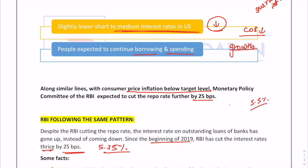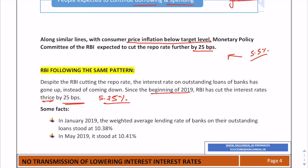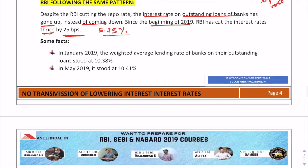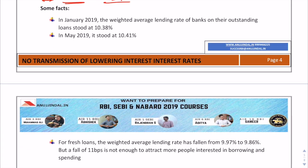A basic assumption would be that as repo rates go down, lending rates will also go down, thereby increasing the demand for loanable funds. But this is not happening — the interest rate on outstanding loans of banks has actually gone up instead of coming down. In January 2019, the average lending rate of banks was 10.38 percent, but it stood at 10.41 percent later.